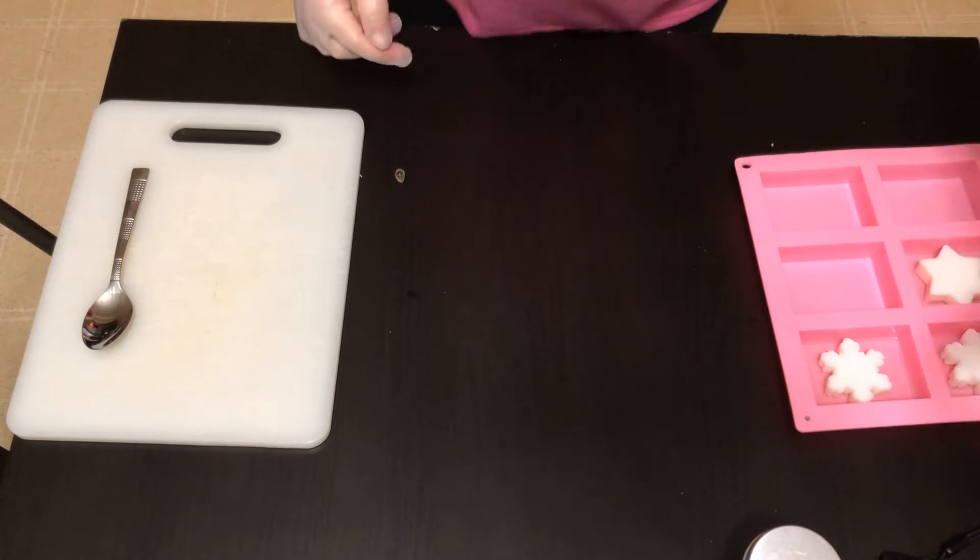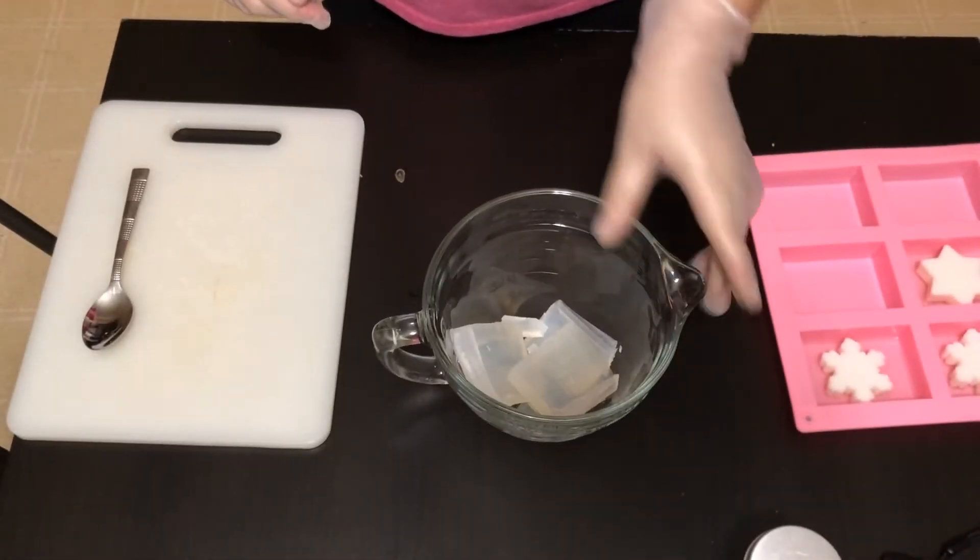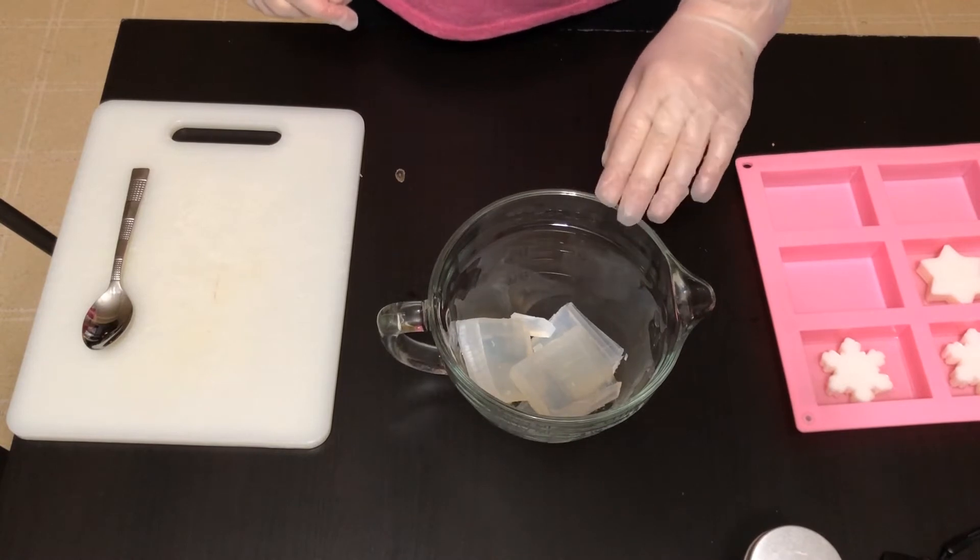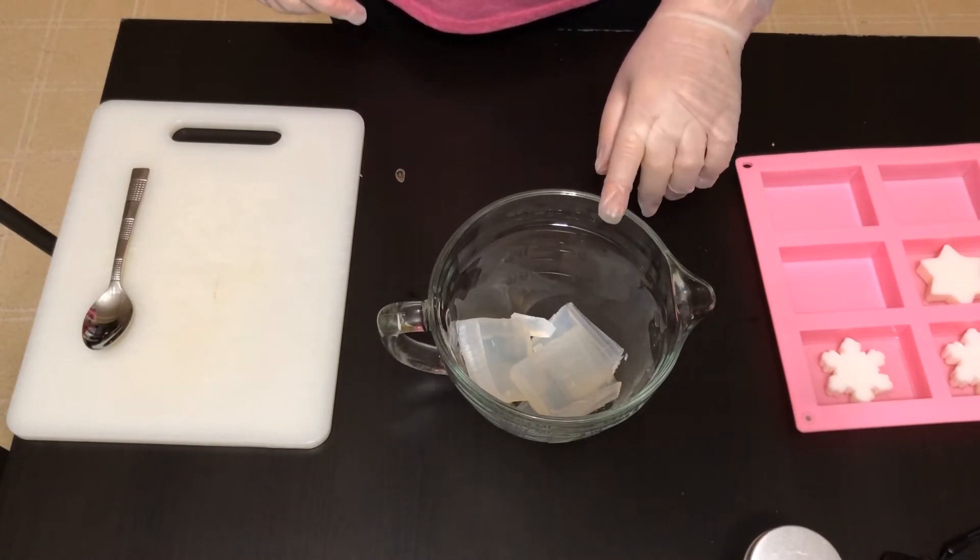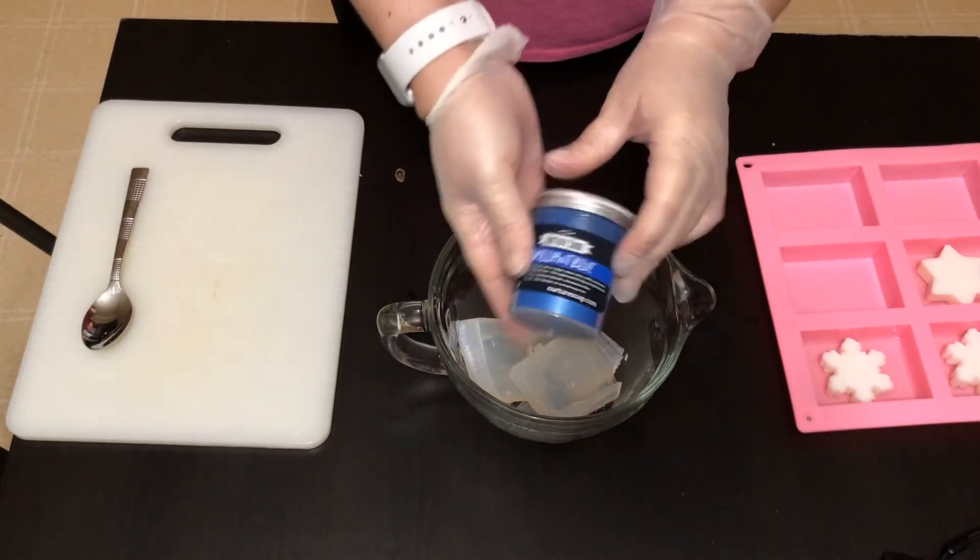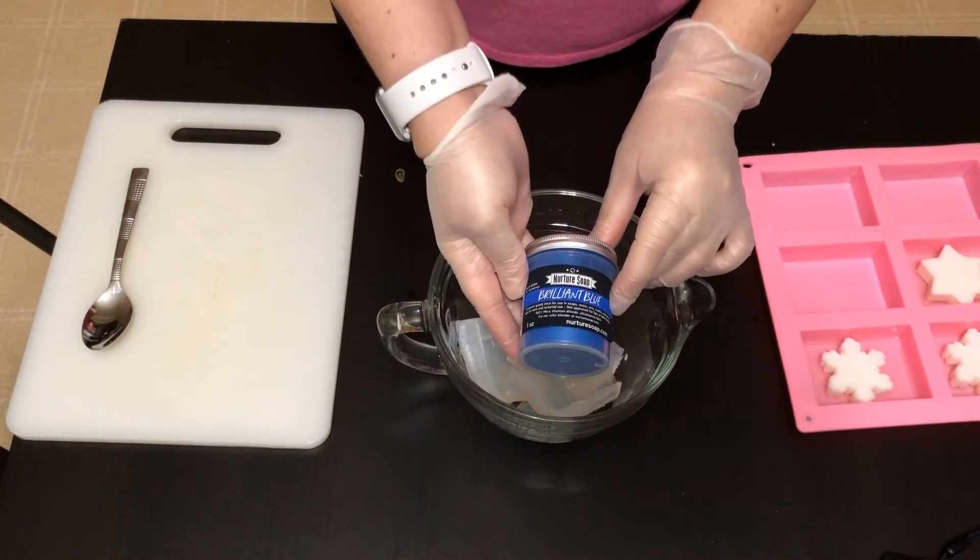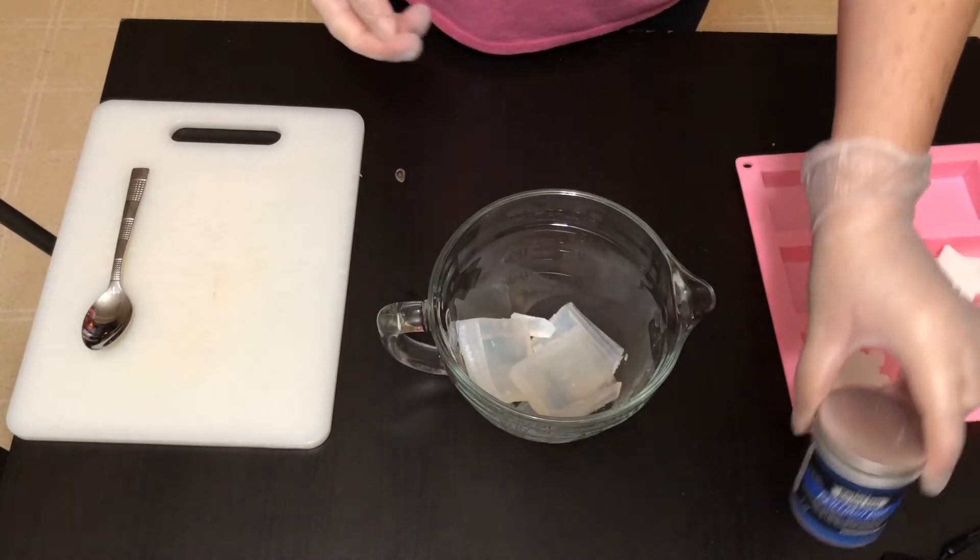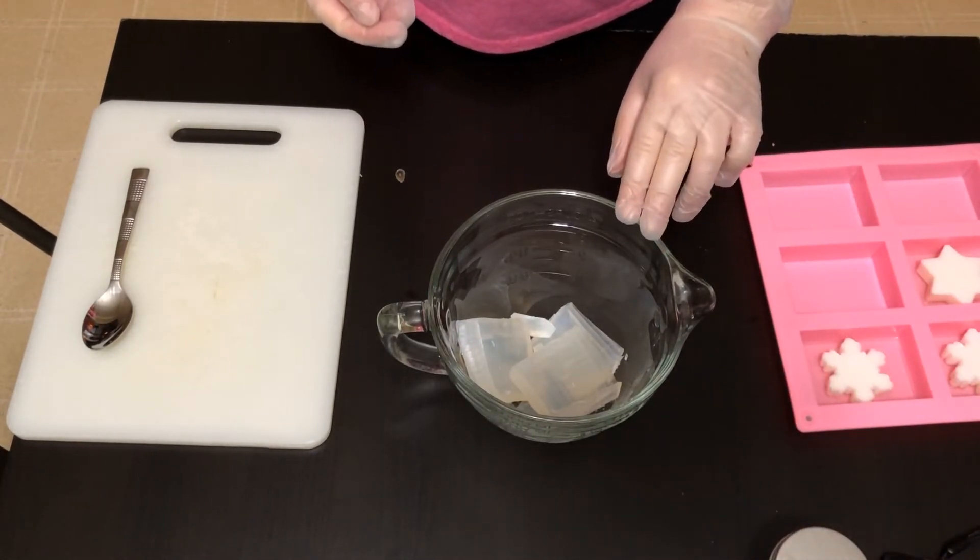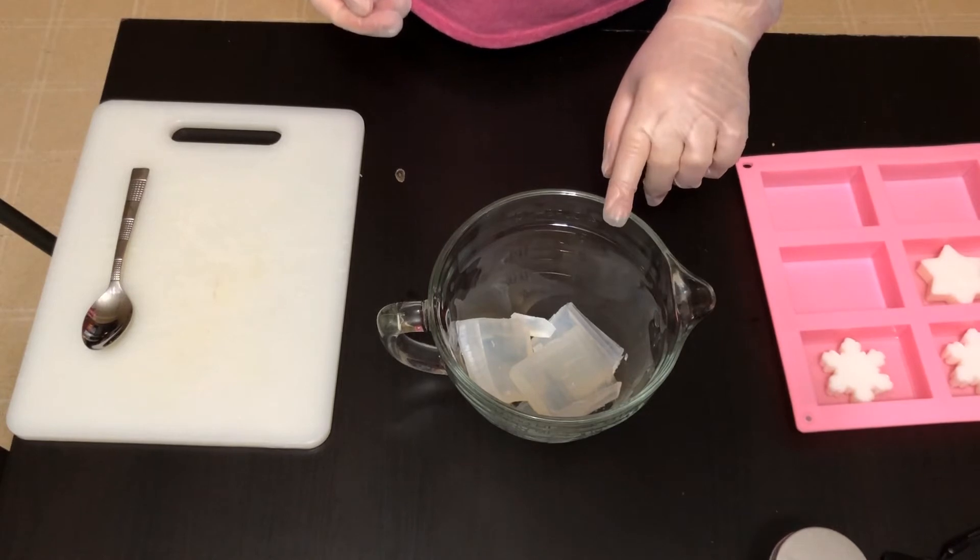So next I have four more ounces of the clear melt and pour, so I'm going to go ahead and get that melted and then we're going to color this with brilliant blue from Nurture Soap and then scent it with some vanilla and cinnamon essential oils. So I'll get this melted and be right back.